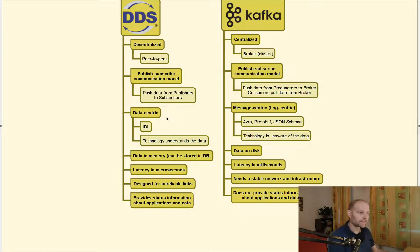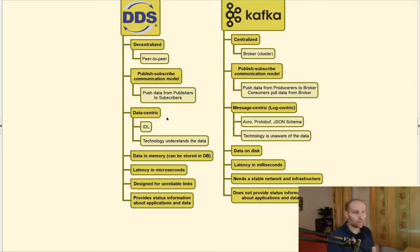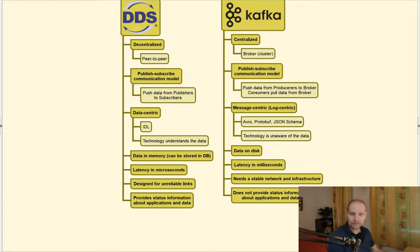DDS technology is data-centric. It uses IDL, Interface Definition Language, for description of data that are shared among all parts of the system, and the technology understands the data so it can fine-tune the communication between publishers and subscribers. On the other hand, Kafka is message-centric technology — it treats every piece of data as a stream of bytes and uses Avro, Protobuf, and JSON for describing the data, but the technology is never aware of the data.